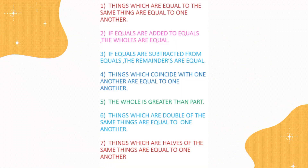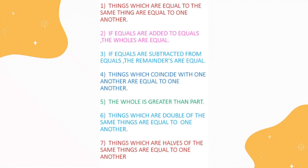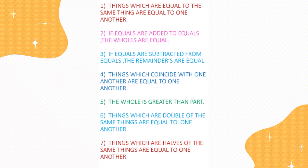There are 7 Euclid's Axioms. 1. Things which are equal to the same thing are equal to one another.